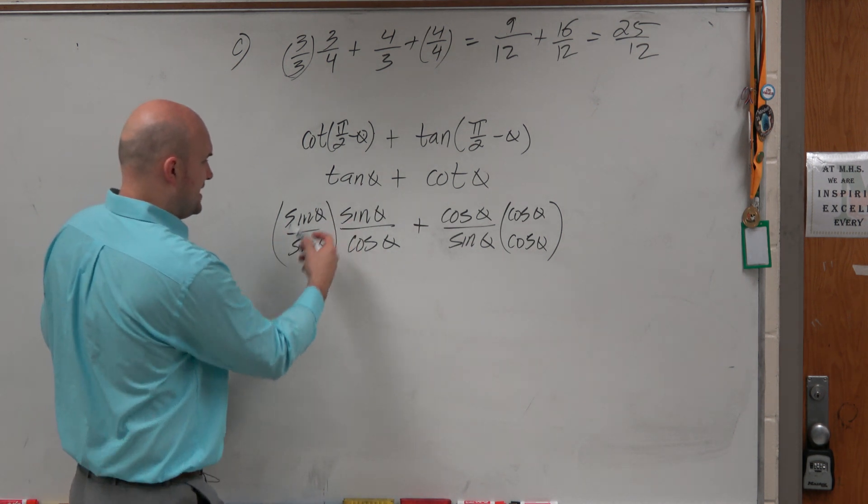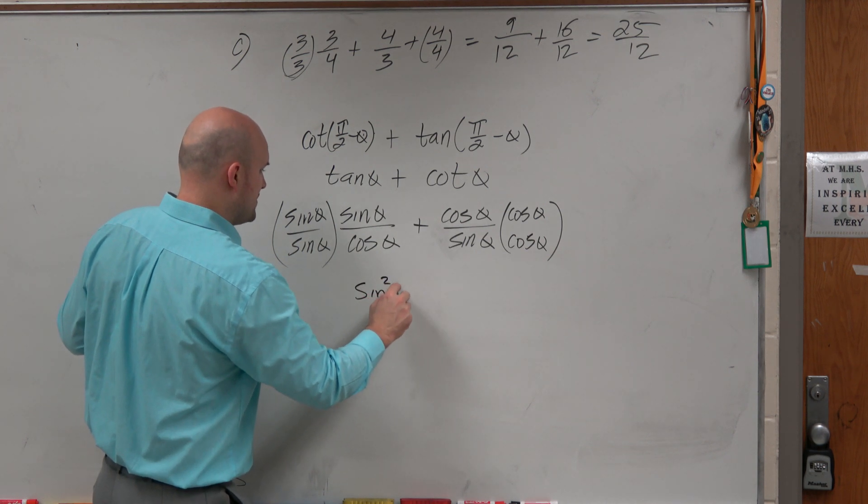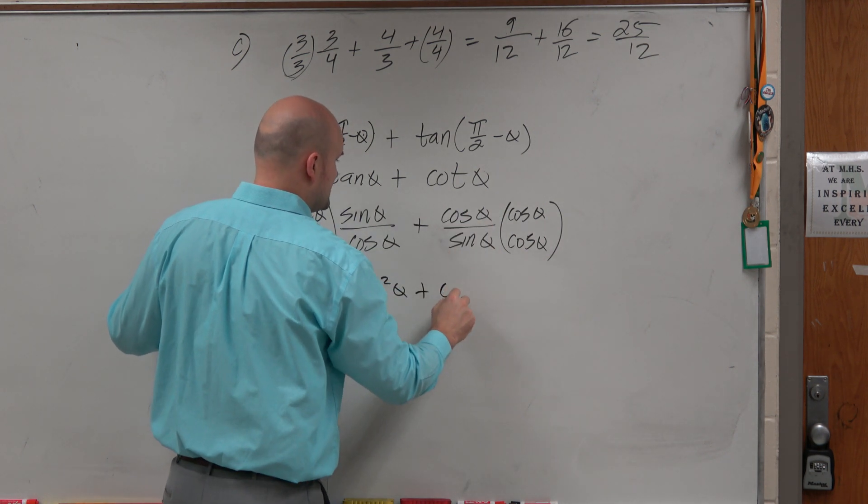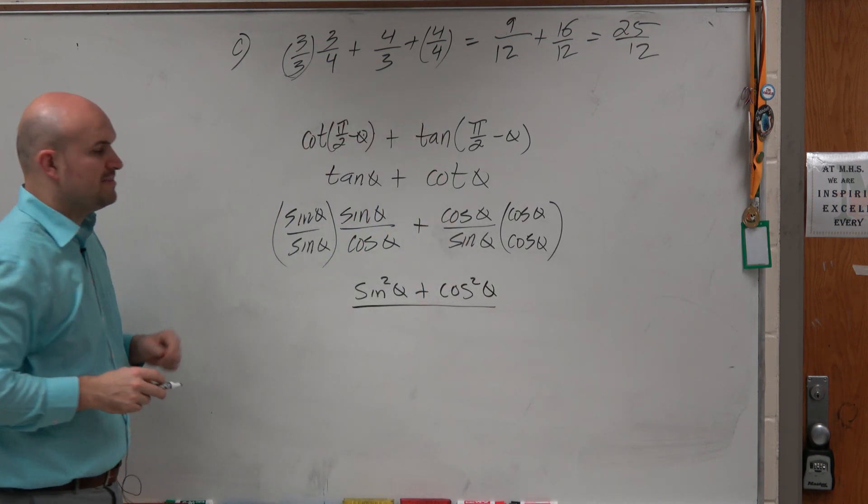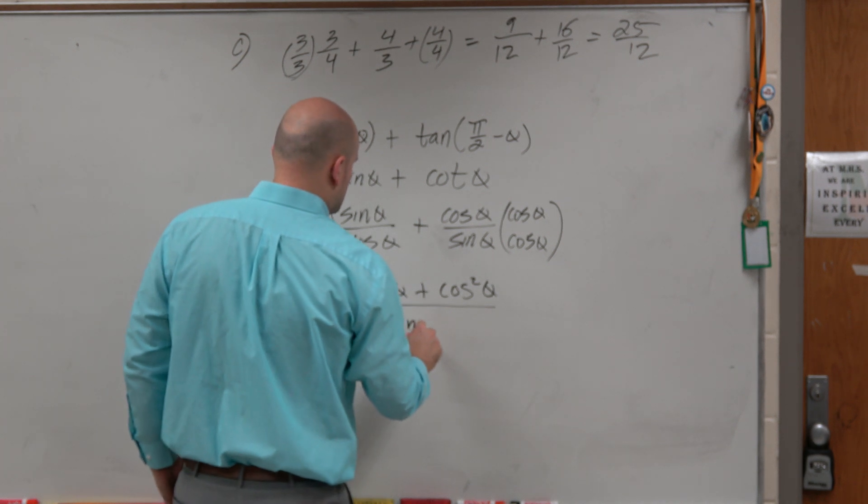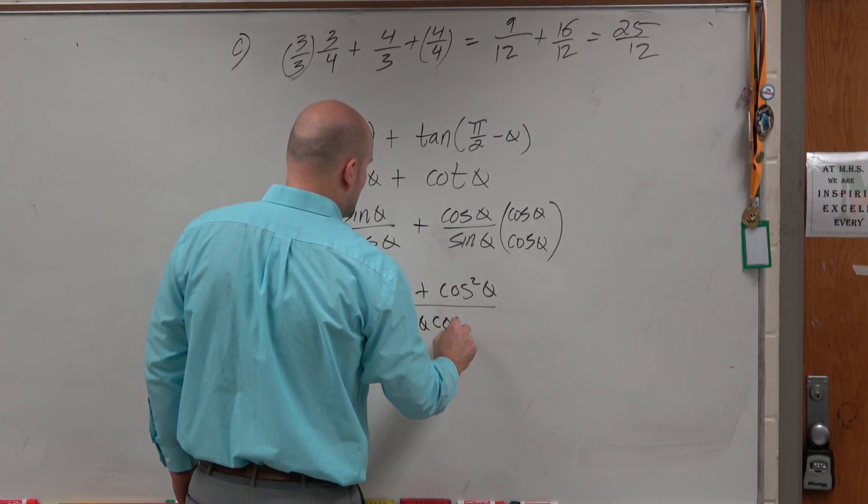So I multiply sine of theta times sine of theta is sine squared of theta plus cosine times cosine is cosine squared of theta. And now I can just write them under the same common denominator, which is sine of theta times cosine of theta.